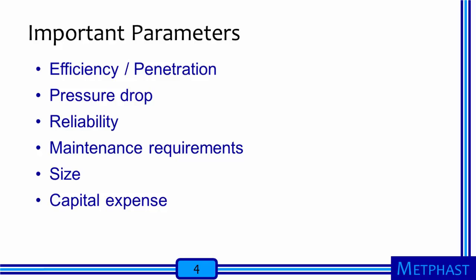Important parameters to consider when evaluating different air cleaners include, first and foremost, the efficiency of the air cleaner. All else being equal, we want efficiency to be as high as practicable. The flip side of efficiency is penetration. While efficiency is how much of a material coming into an air cleaner is removed, penetration is how much gets through, which could be more important from the standpoint of exposure.